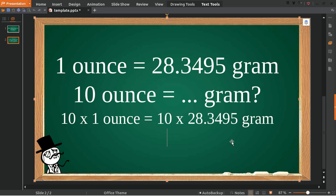Now 10 multiply 1 is equal to 10. 10 ounce is equal to 283.495 grams. That's the answer to the question.